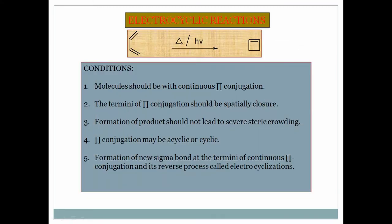For an electrocyclic reaction, the substrate has to follow certain conditions. Condition one: the molecule should have continuous pi conjugation. You have to observe whether continuous conjugation is present. Here two double bonds are in conjugation. Condition two: the ends of the pi conjugation should be spatially closer — if the terminal carbons are spatially far apart, the reaction is very difficult to proceed. Carbons 1 and 4 are spatially close here.